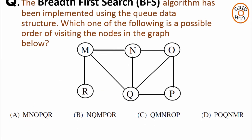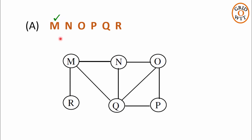Let us check option A. First, node M is traversed. Now the direct neighbors of node M are N, Q and R. These 3 direct neighbors of node M should be traversed first in any order before going to the next level of neighbors. In the traversal sequence, next node is N — no problem, N is traversed. Next node is O. It is not possible to traverse node O in BFS before traversing all the neighbors of node M; that is, O cannot come in the traversal sequence before nodes N, Q and R when the first node traversed is M. So the traversal sequence given in option A is wrong.